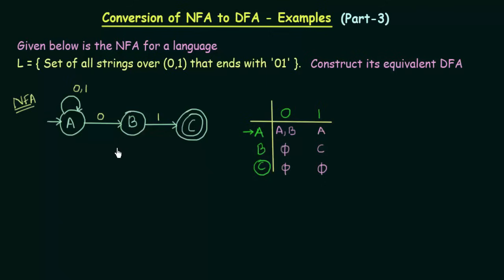How do we know that this is an NFA? We see that A on getting input 0, a particular input, goes to two different states. This is a property of an NFA which cannot be there in a DFA. Also, B on getting input 0 goes nowhere — it goes to phi — and C on getting both input 0 and 1 also goes to phi. That means it does not go anywhere. This is the property of NFA.